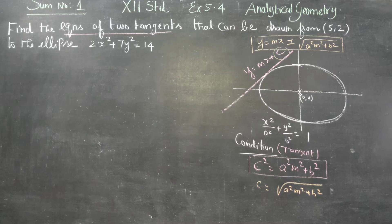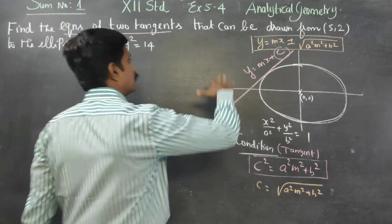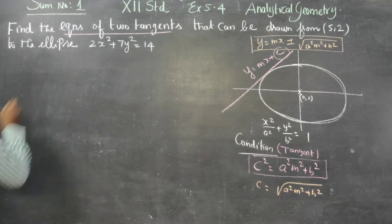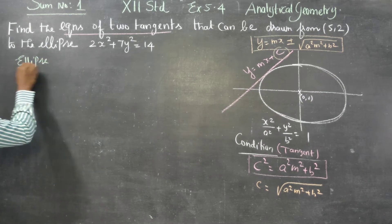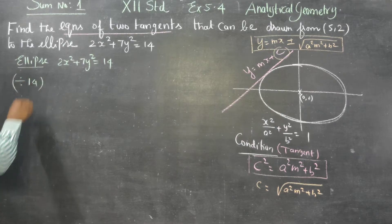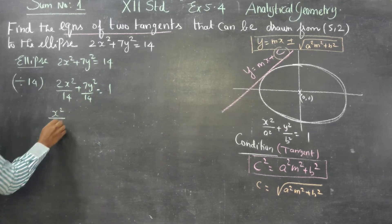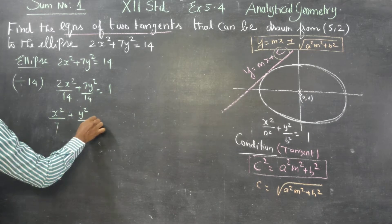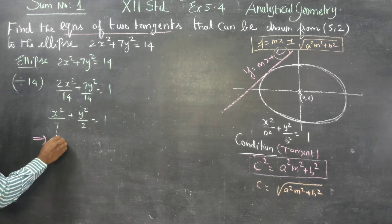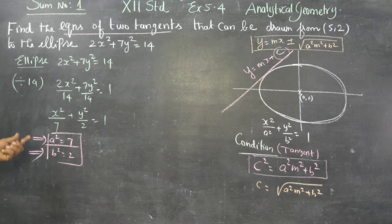Finding the value of c and substituting back, the equation of tangent becomes y = mx ± √(a²m² + b²). Using these formulas and this condition, we move to the problem. First, I will convert the ellipse 2x² + 7y² = 14 to standard form by dividing all terms by 14, giving x²/7 + y²/2 = 1. Therefore a² = 7 and b² = 2.